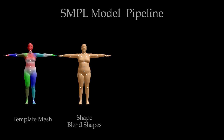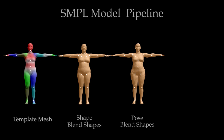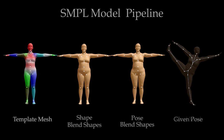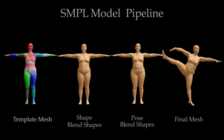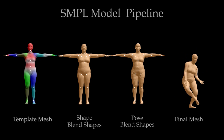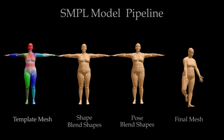From training scans of people in many poses, we learn pose blend shapes that capture how real bodies differ from blend skin bodies. Given a pose, SMPL computes the linear contribution of these blend shapes, corrects skinning errors, and produces realistic pose-dependent deformations. Finally, SMPL uses standard blend skinning to transform the deformed template shape into the desired pose. Note that the contribution of the pose blend shapes changes with pose.